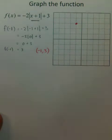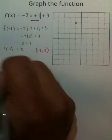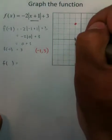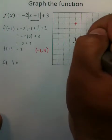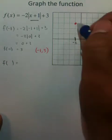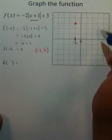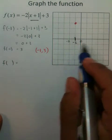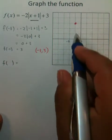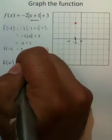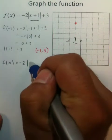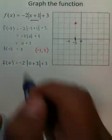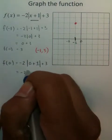The next steps require some more calculations — you need to pick more values to put into your function. Since the vertex is at negative 1, I'll pick the two x-values next to it: 0 and negative 2. We'll try 0 first and start calculating — basic arithmetic is all you're doing.